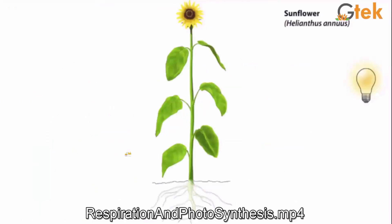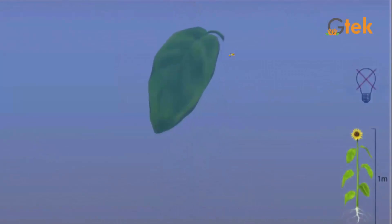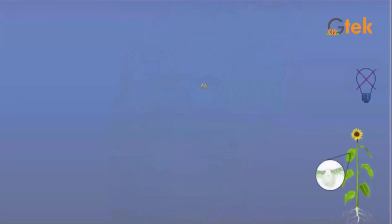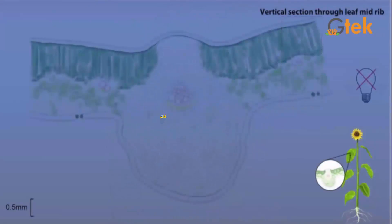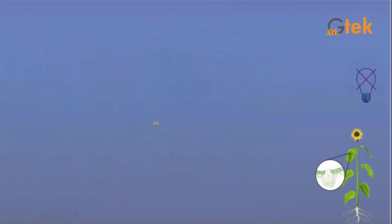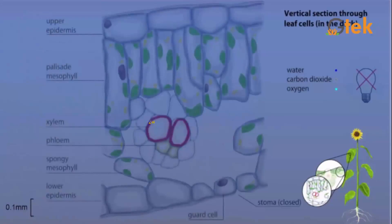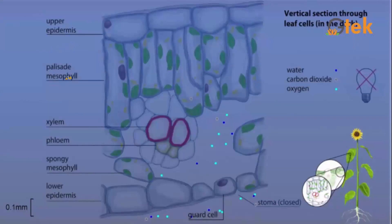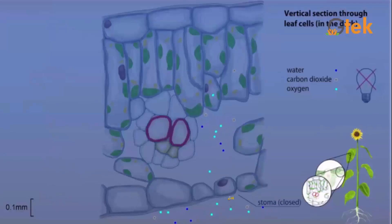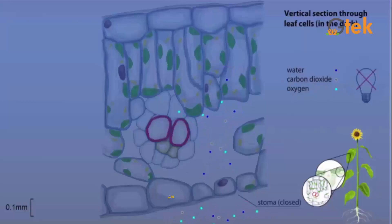Now let us see about transpiration and photosynthesis. We are going to take a leaf — it has a vertical section through the leaf midrib. Inside the leaf midrib, there is a vertical section through the leaf cell. This actual section contains the upper epidermis, and also has the guard cell stoma — when it is closed, water, carbon dioxide, and oxygen travel along the vertical section through the leaf cell.